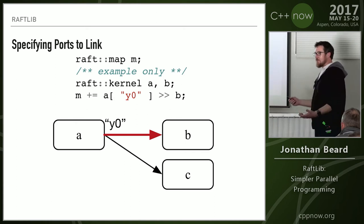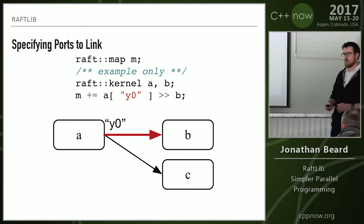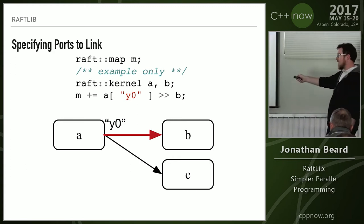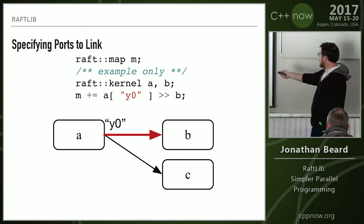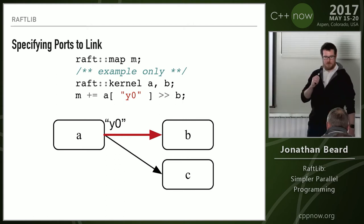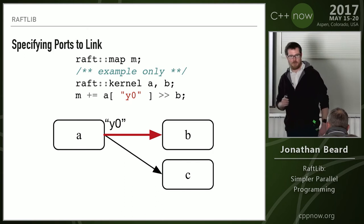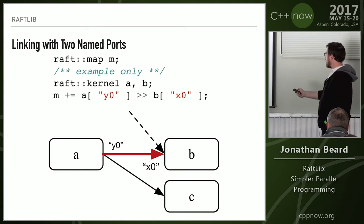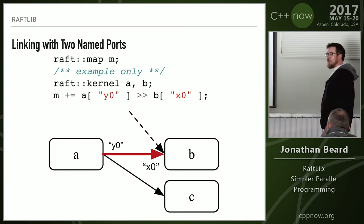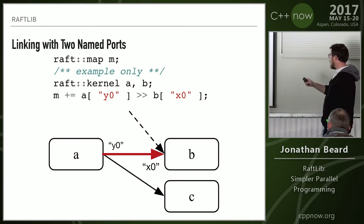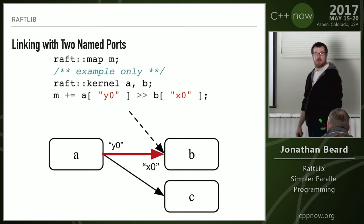Specifying ports to link to: if I have five output ports on kernel A, they all have names in RaftLib. I've overloaded the bracket operator to specify which output port I want — for example, Y0 — and on the right side this specifies the input port for B. So I hook Y0 to X0 of kernel B. We can extend this further: the bracket operator is context-dependent within the DSL. If it's on the left side of the right-shift it means output port for A; on the right side it means input port for B. So the assignment is context-dependent and it makes the link.